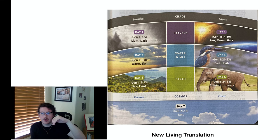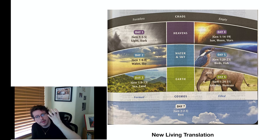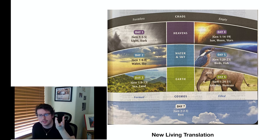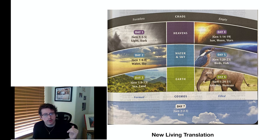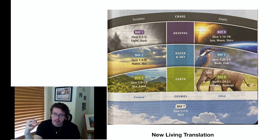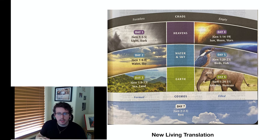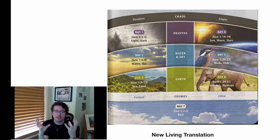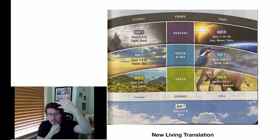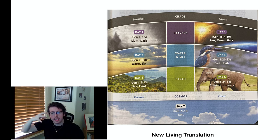On the right side, now we're filling the world. First he's describing the form of things, then on the right — days four, five, and six — he's populating the world. Day four: the sun, moon, and stars, related to day one of light and dark, because the sun and moon define light and dark for us. Day five is related to day two: we had water and sky, and now it's populated with birds and fish. Then day three was sea and land, and day six populates it with animals and humans. There's a cosmic pattern here that's emerging.